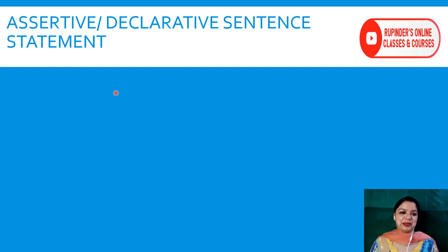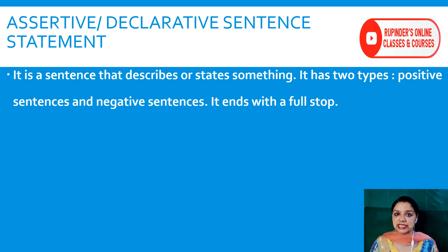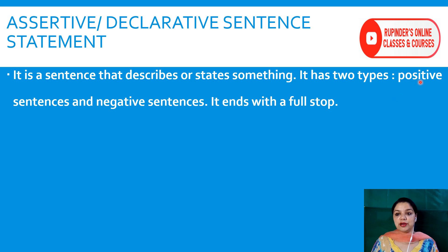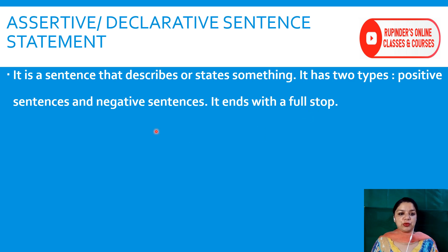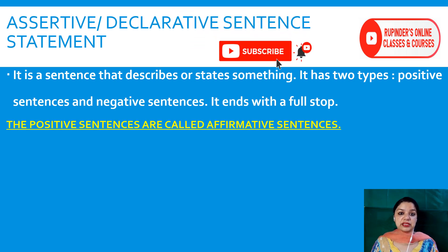Beginning with the assertive sentence: an assertive or declarative sentence is a sentence where you declare something, tell a fact, or give a statement. It describes or states something. It has two types: positive sentences and negative sentences. An important point — positive sentences are also called affirmative sentences. Keep that in mind.